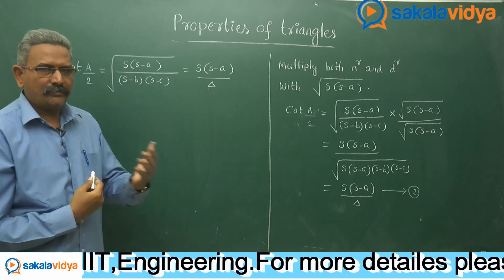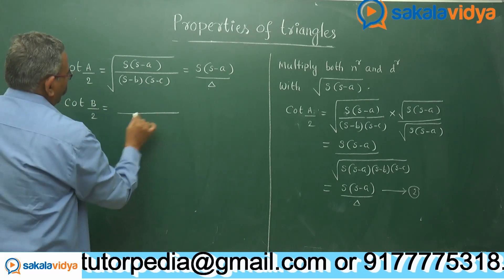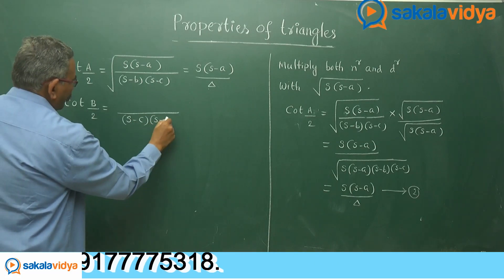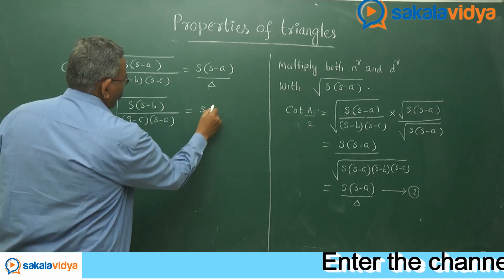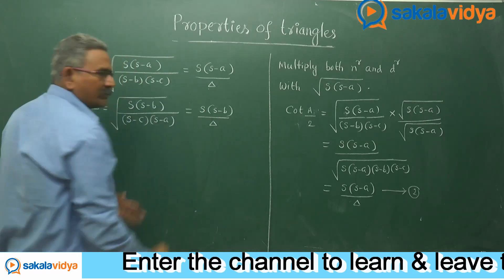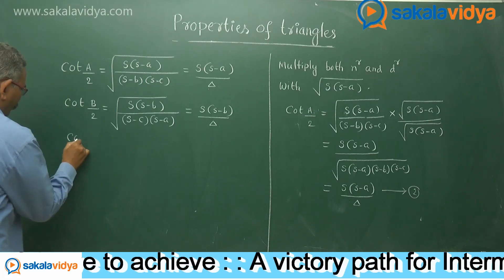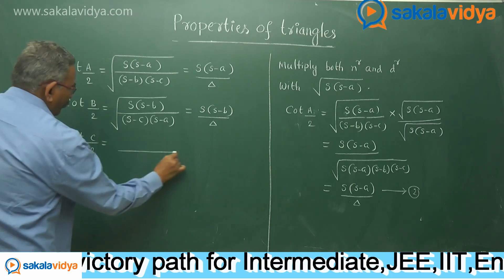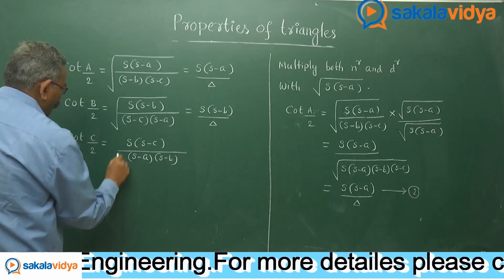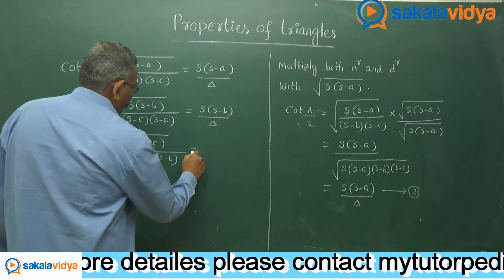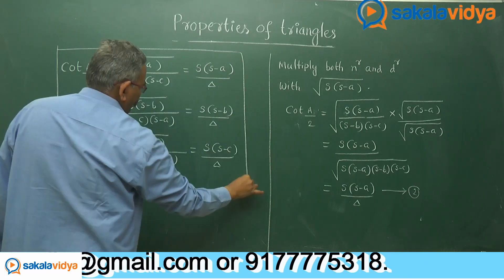I hope you have written it. Now check your answer: cot(b/2) equals root over s(s-b) upon (s-c)(s-a), which can also be written as s(s-b) upon delta. And cot(c/2) equals root over s(s-c) upon (s-a)(s-b), which can be written as s(s-c) upon delta. This is very very important — remember this.